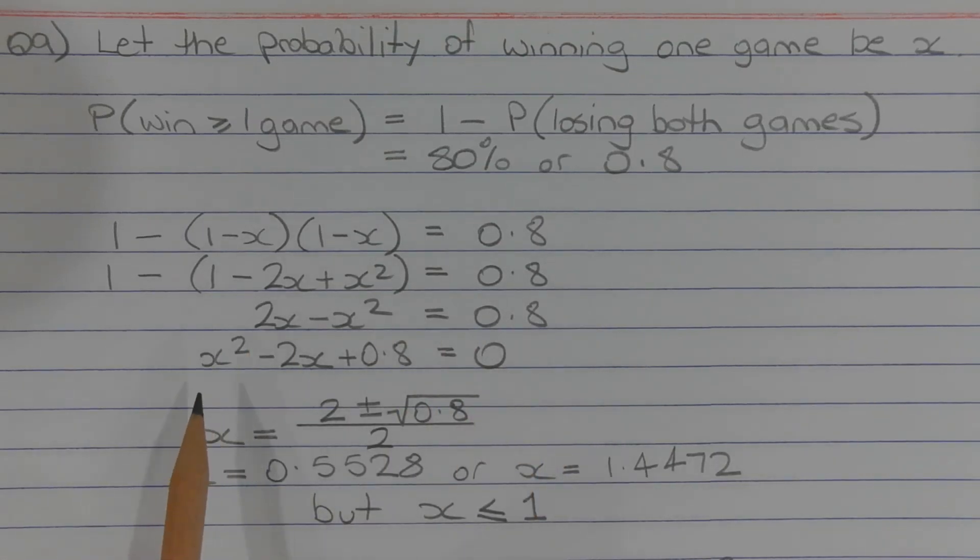Moving all terms to one side to form a quadratic equation we get x squared minus 2x plus 0.8 equals 0.